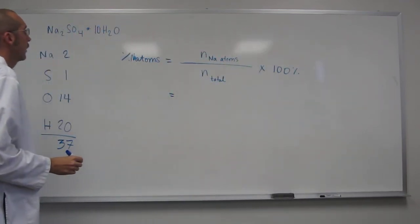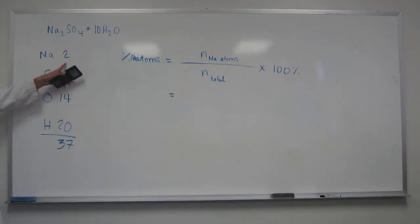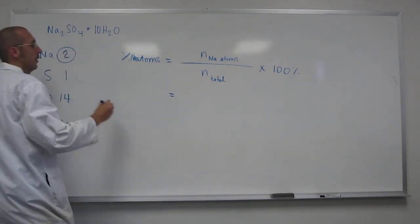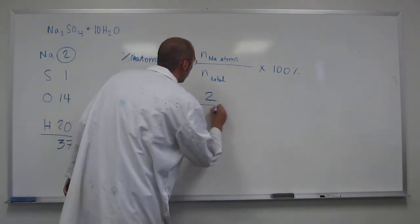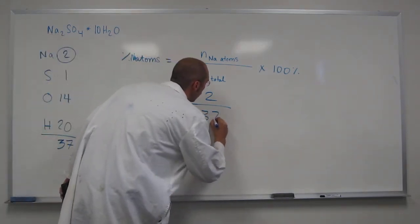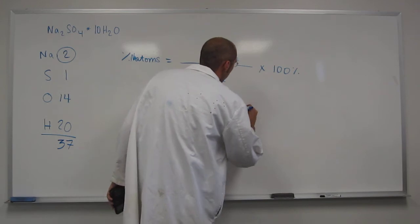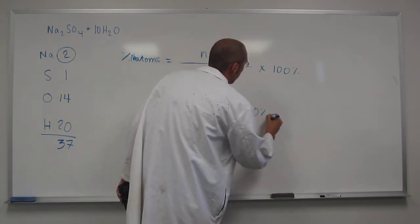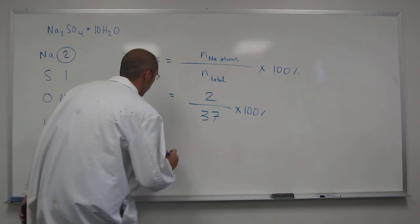So if you look, we've got the number of sodium atoms right here as two, and we've got the total number of atoms right here as thirty-seven. If we multiply that by a hundred percent, remembering that percentages are units there.